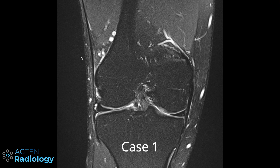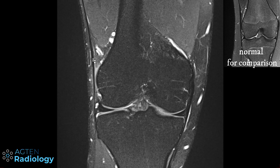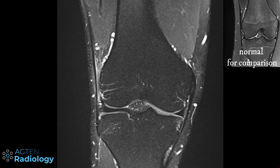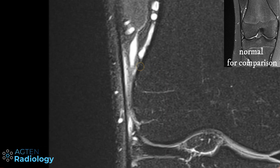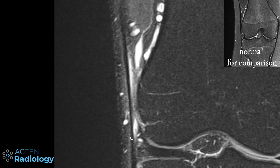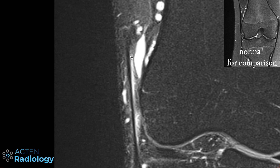Here we have a proton density fat-saturated sequence. Lateral is on this side, medial on the other, and you can see the iliotibial band running all the way down onto the tibia. Between the iliotibial band and the lateral femoral condyle we have edema in the soft tissue, consistent with iliotibial band friction syndrome. You have to be careful not to interpret the normal recesses of the knee joint as a neobursa or adventitious bursa — that is normal anatomy, not pathology.